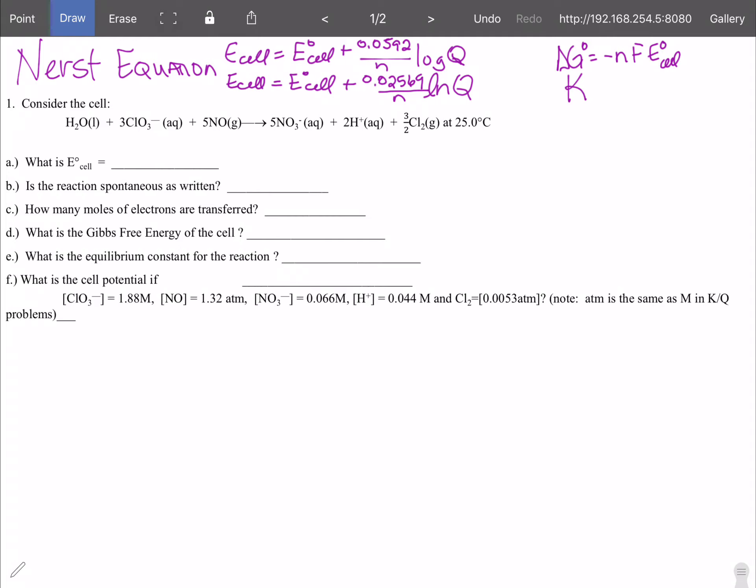As we get started with this problem the first thing that we need to look at is what is it we need. We have two equations for the Nernst equation because if you take the constants and combine them you can either use the regular log or you can use the natural log. But in both cases we're going to need E cell standard and we're going to need the number of moles.